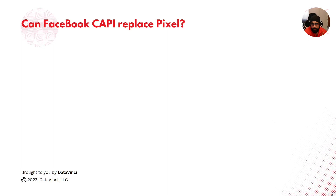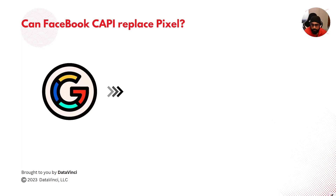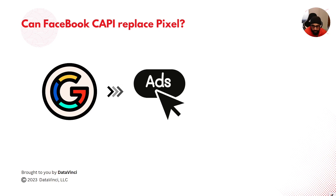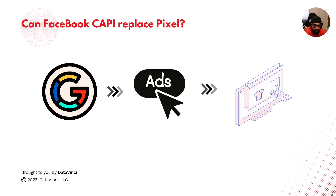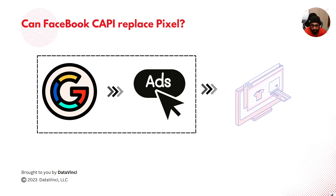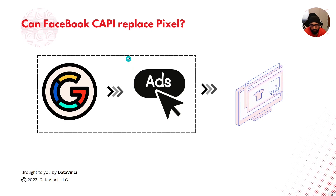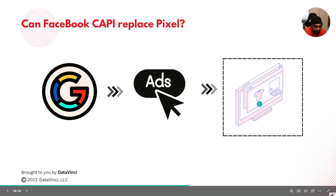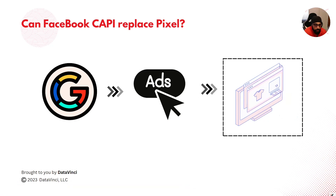Now, can Facebook CAPI replace the pixel? To understand that, we need to look at two use cases of the marketing pixel. The first use case: you go on a marketing platform like Facebook, you see an ad, you interact with it, and then you land on a website or app that the advertiser is promoting. For the time you are on the marketing platform, they know what you are doing because they own that platform. But the moment you leave and go to the advertiser's platform, they do not have control unless the advertiser shares data with them.